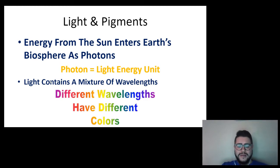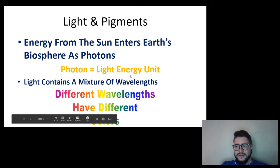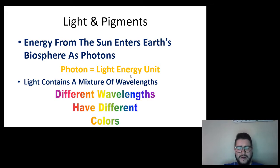The other thing you need to know before we get into the fine details of photosynthesis is a little bit about lights and pigments. The energy from the sun enters the Earth's biosphere as a photon. A photon is basically the light energy unit. A photon works as both a particle and a wave. Light has different wavelengths. The length between the crests of each wave—think of ocean waves, how they hit one after another. The distance between each of those waves is called the wavelength. Different colors of light have different wavelengths.